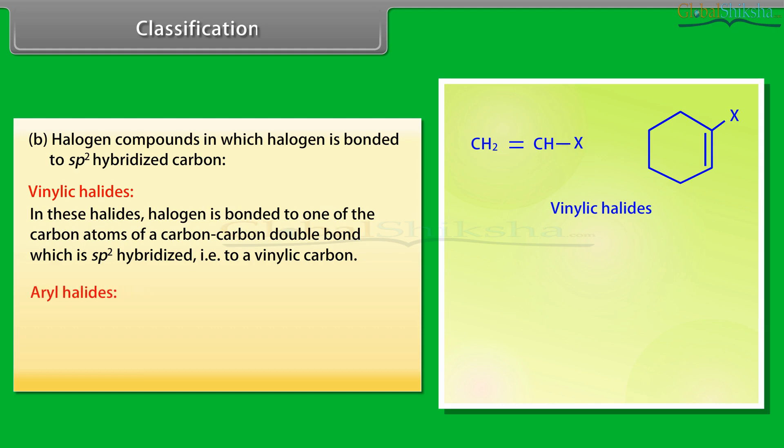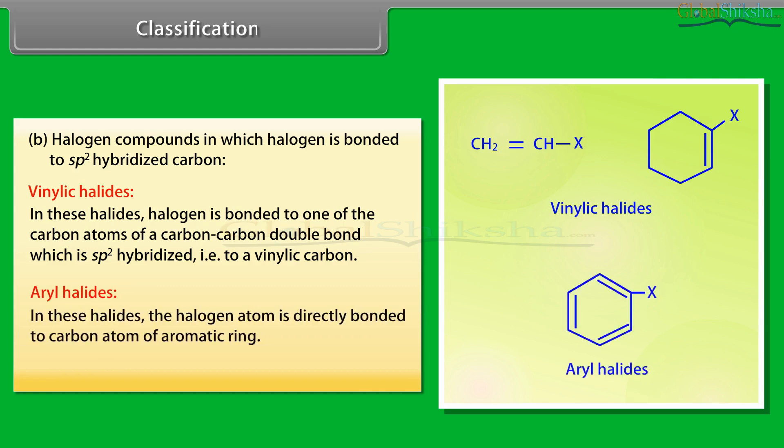Aryl halides: In these halides, the halogen atom is directly bonded to carbon atom of the aromatic ring, for example, halobenzene.